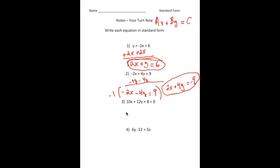Number three: we have 10x plus 12y plus eight equals zero. This one, all we have to do is take away 8 from both sides, and we'll get 10x plus 12y equals negative eight.